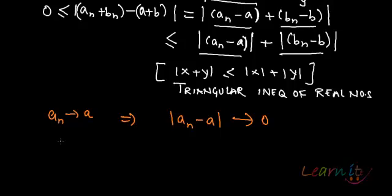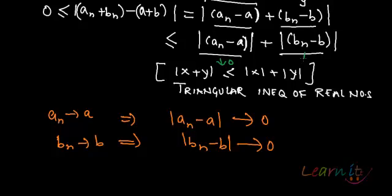And also what I know about Bn is that it tends to B. So that implies Bn minus B tends to 0. So what do I have from here? I have from here that this particular thing tends to 0. This particular thing tends to 0.